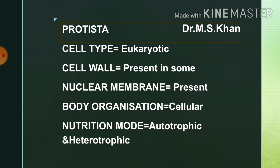The next kingdom is Kingdom Protista. In this, the cell type is eukaryotic. Cell wall is present. Nuclear membrane is also present. Their body is made of cells, i.e., cellular organization. The mode of nutrition can be either autotrophic or heterotrophic.